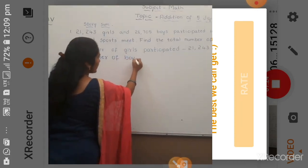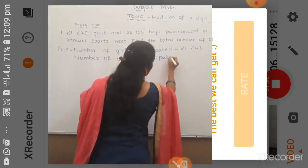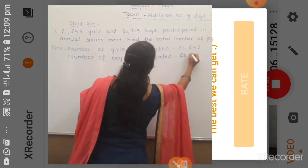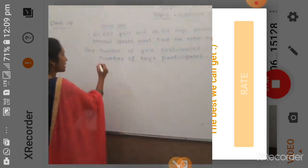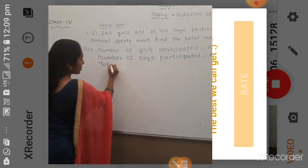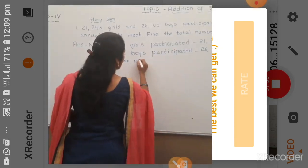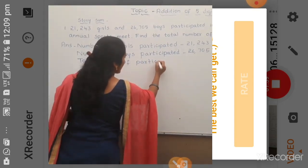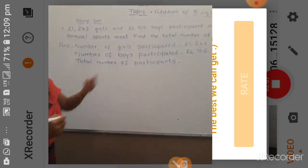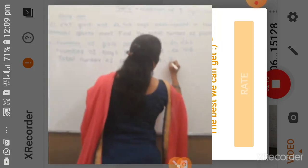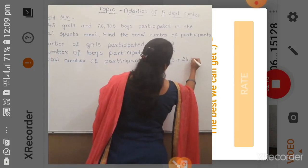The next statement: number of boys participated — that is 26,705. So here we have written the number of girls and number of boys participated. Next, the third statement is we have to find the total number of students participated. For this we have to add the number of boys and the number of girls together.